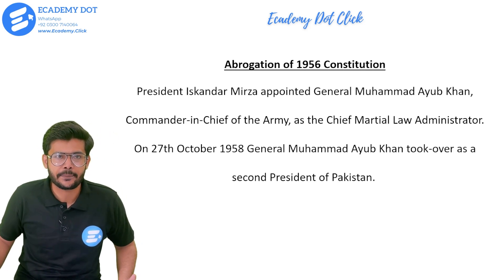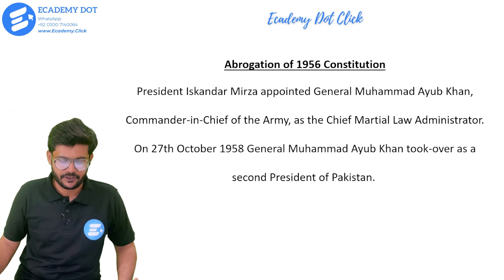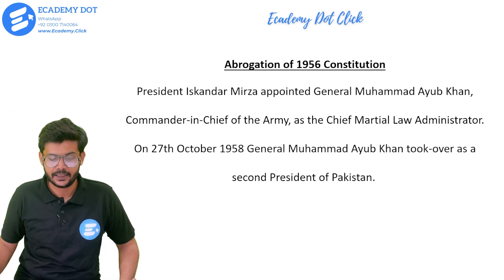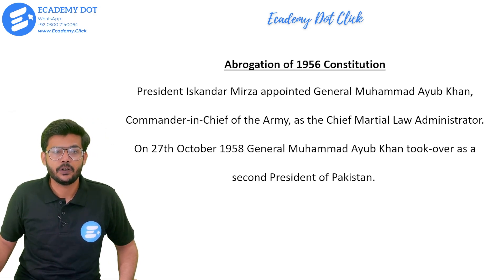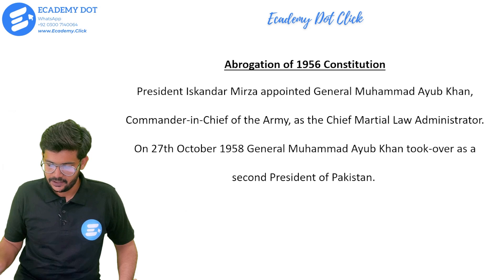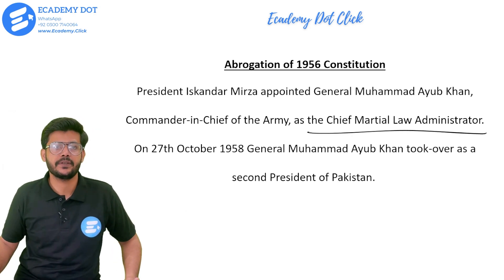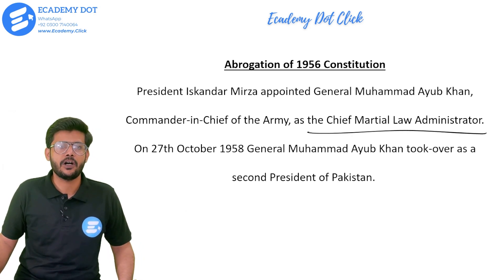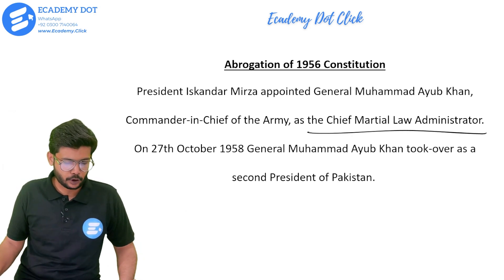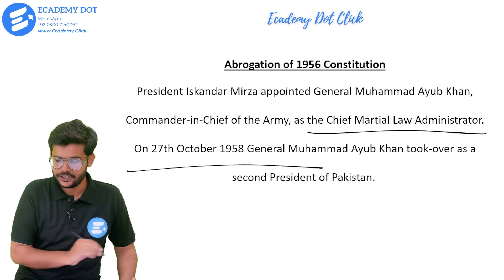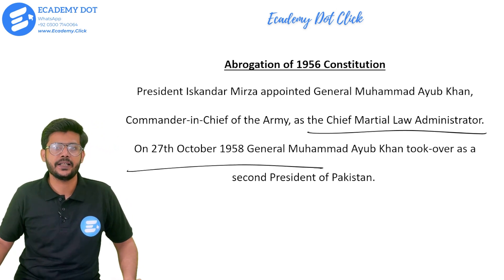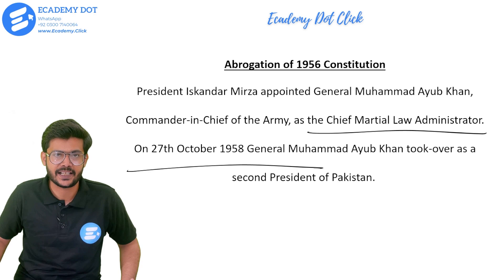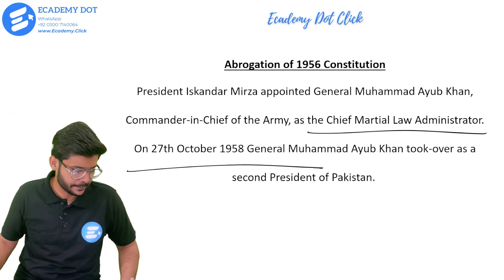President Iskander Mirza made the Commander-in-Chief of the Army, General Ayub Khan, the Chief Martial Law Administrator. Then on 27 October 1958, General Ayub Khan took over and became the second president of Pakistan.